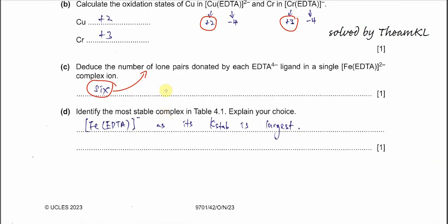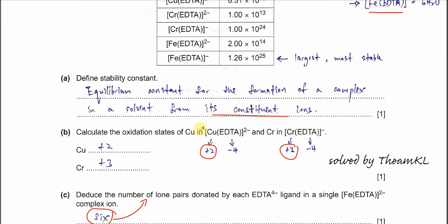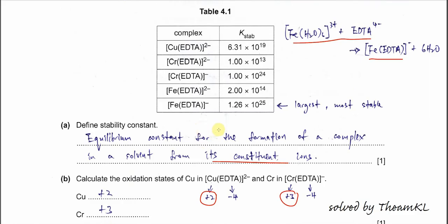Part D: identify the most stable complex ion in Table 4.1 and explain your choice. We simply find the highest Kstab value, which is the complex ion between iron(III) and EDTA, with a Kstab of 1.26 × 10²⁵. Because it's the largest, it is the most stable — a higher Kstab means the complex ion forms more readily, so its concentration is relatively higher and it is more stable.